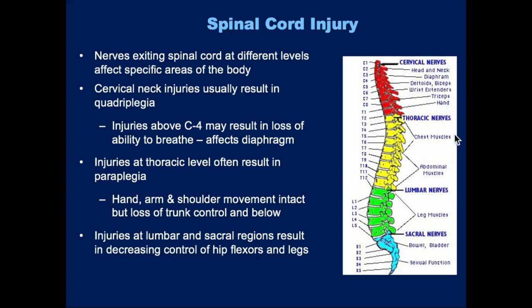With thoracic nerve injuries, you're more likely to get a paraplegia where the patient can still move their upper body but loses control of their trunk and legs below. Injuries at the lumbar and sacral nerves have more control over the leg muscles, and something more unique — you can lose potentially bowel and bladder function.